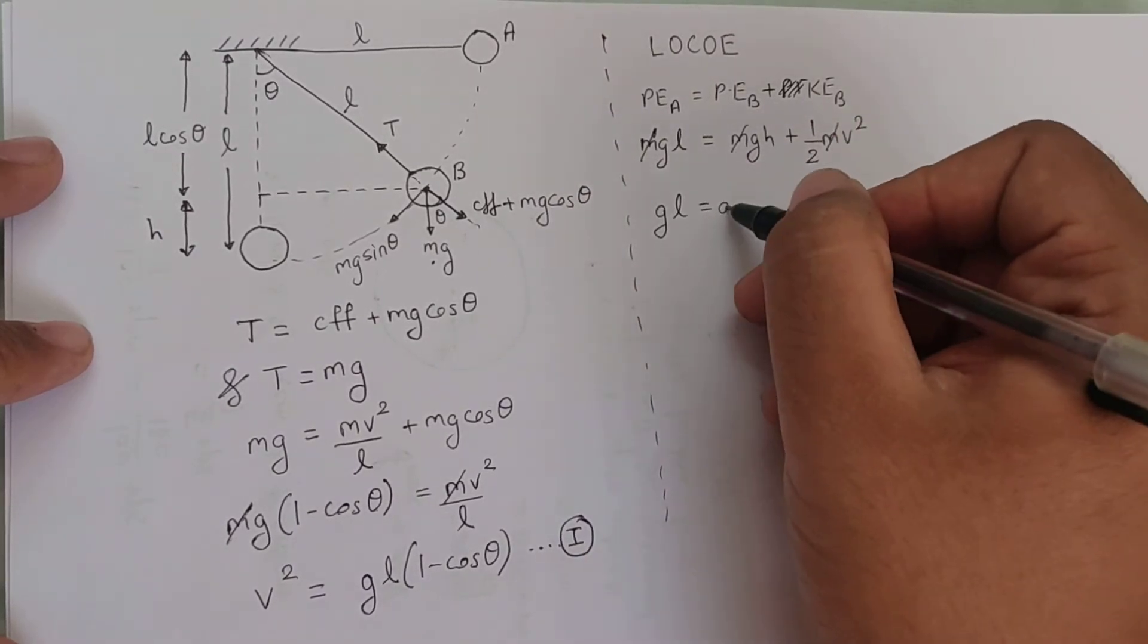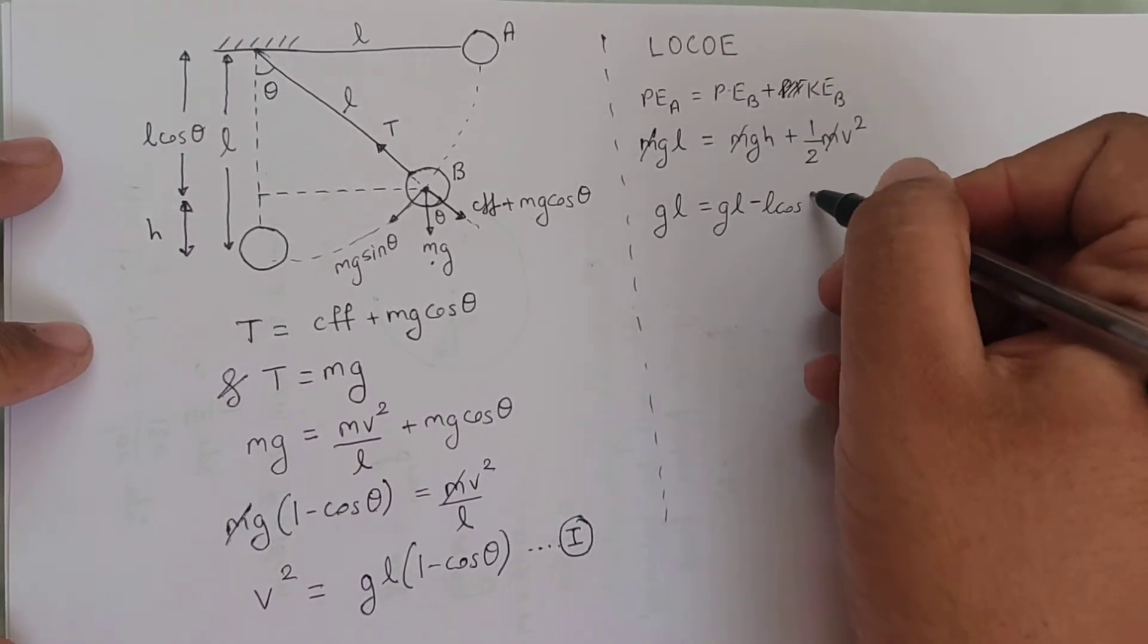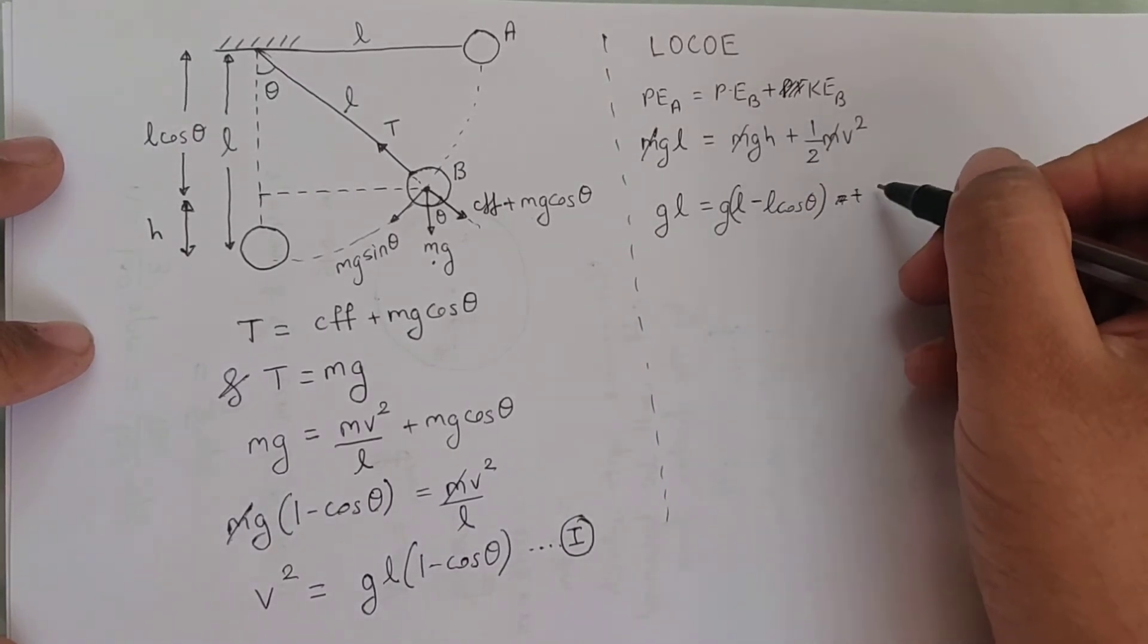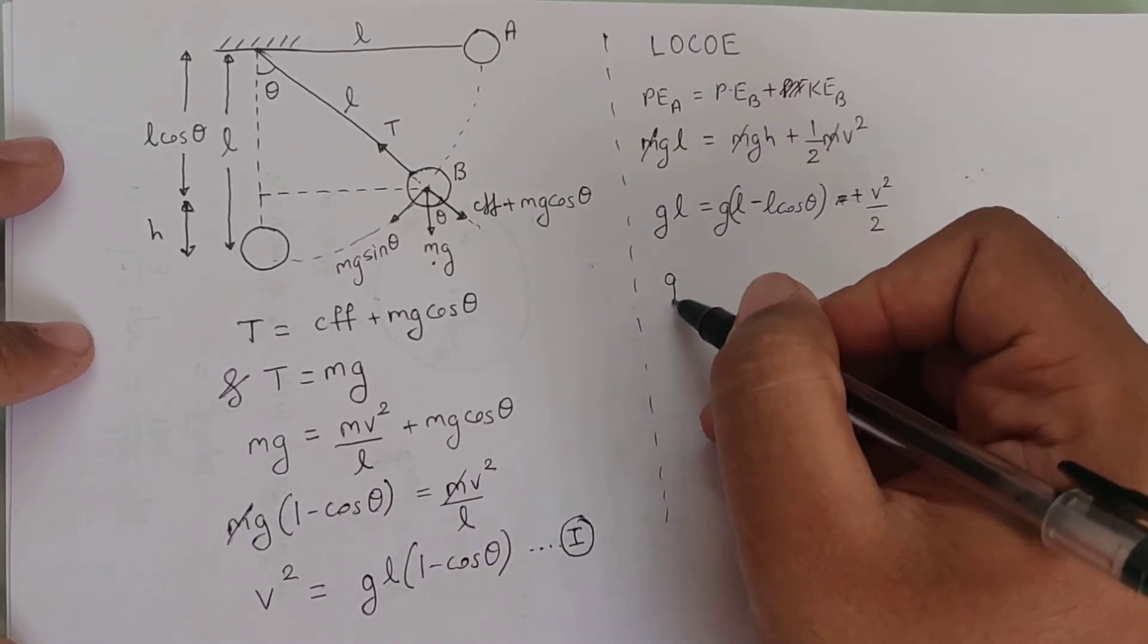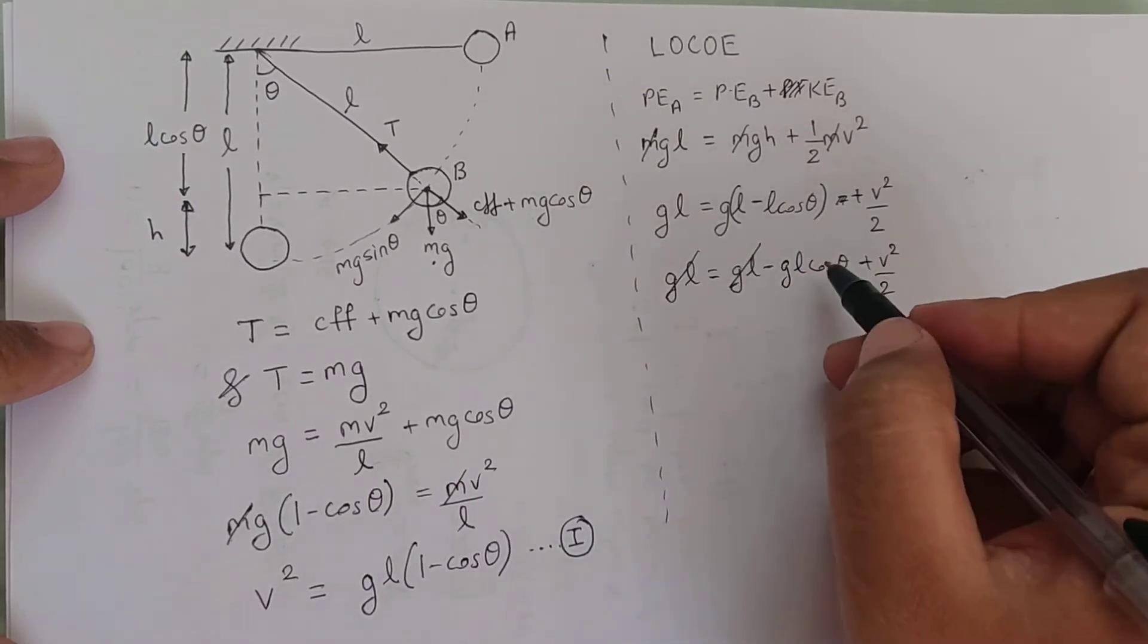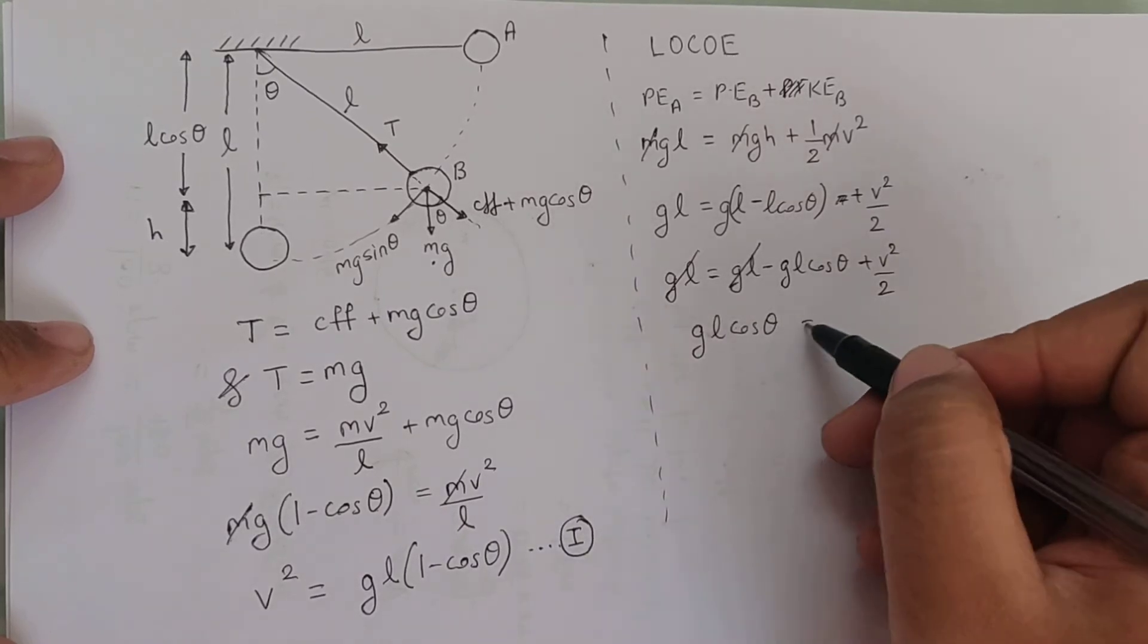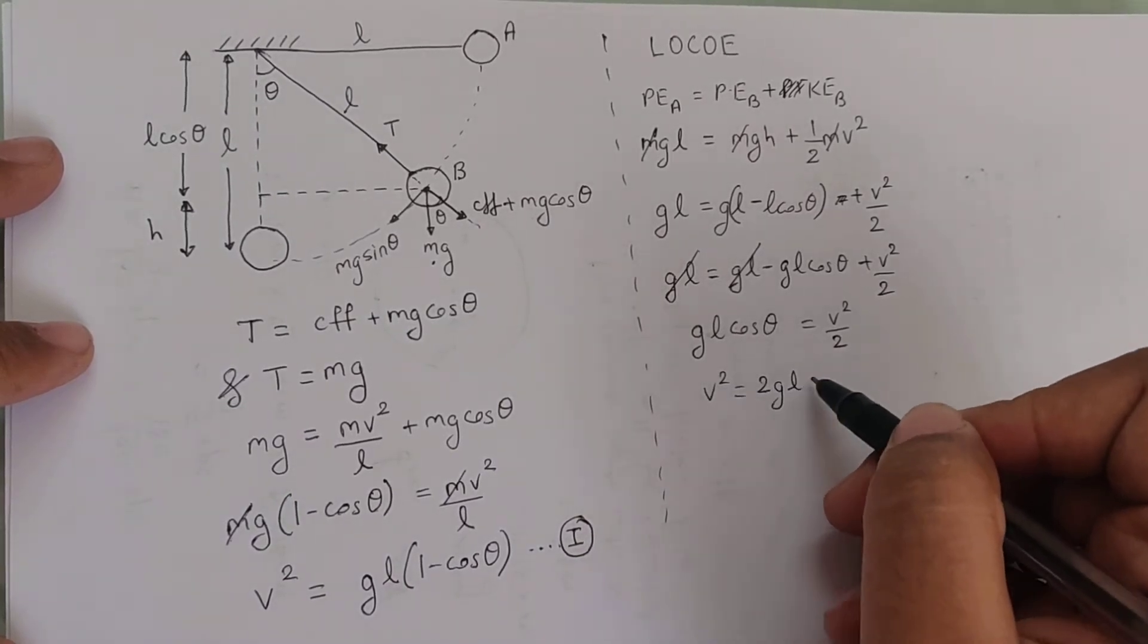We can cancel M throughout and substitute H as L minus L cos theta. If I open the bracket I get gL equals gL minus gL cos theta plus V² by 2. gL will get cancelled and I take this on the other side, which gives me gL cos theta equals V² by 2. Therefore V² is 2gL cos theta.